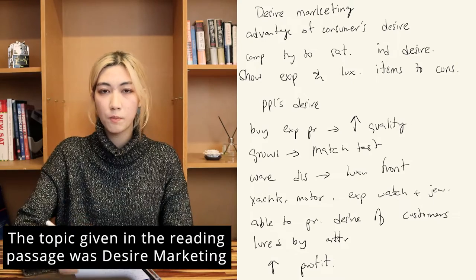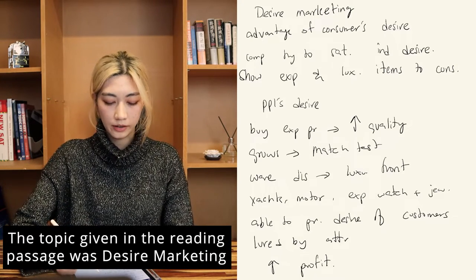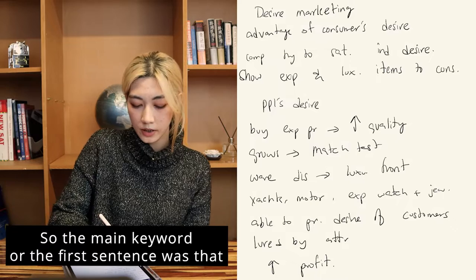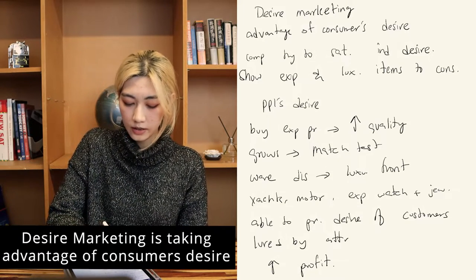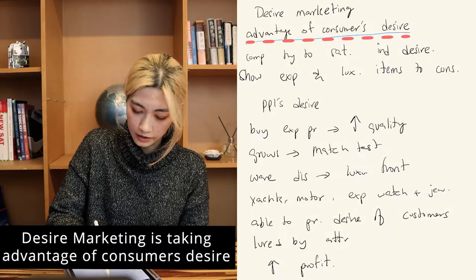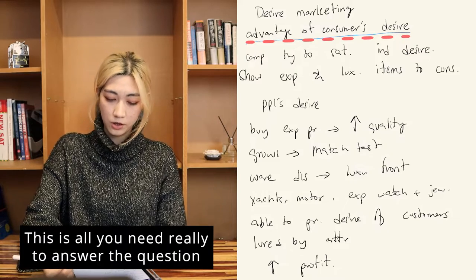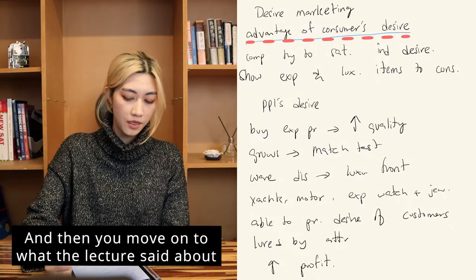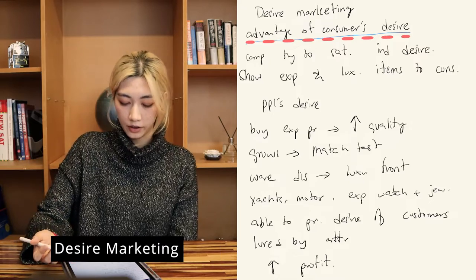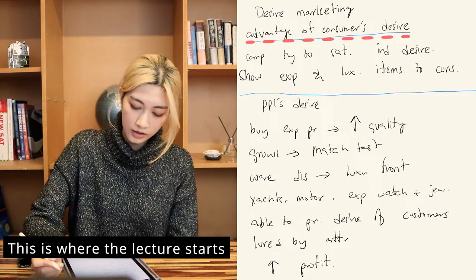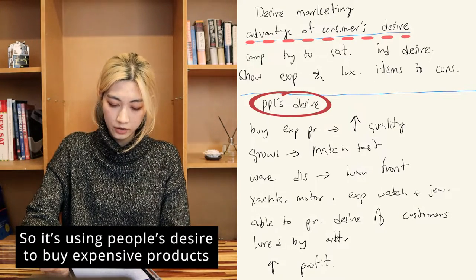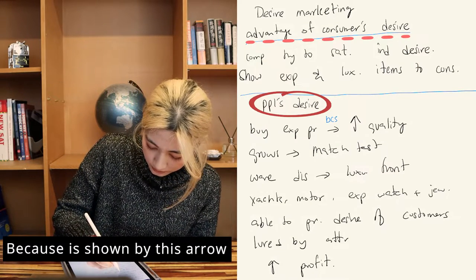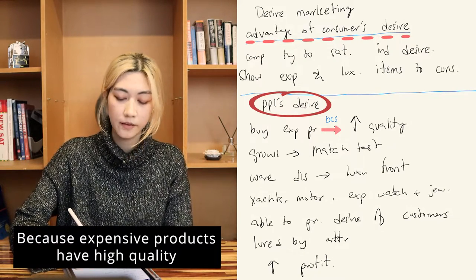The topic in the reading passage was desire marketing, and I tried to note keywords just as in the previous question. The main keyword is that desire marketing is taking advantage of consumers' desires — that's really all you need to answer the question. You first explain what desire marketing is, then move on to what the lecture said. From the lecture: people buy expensive products because expensive products have high quality.